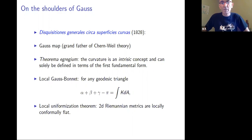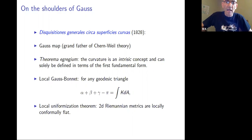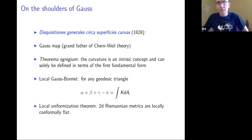He also proved a local Gauss-Bonnet theorem — there's a local version where the angular defect of a geodesic triangle is equal to the total Gaussian curvature of that geodesic triangle. The sum of interior angles minus pi equals the total Gaussian curvature.